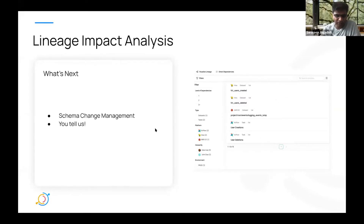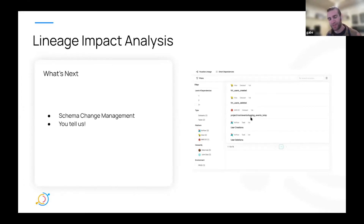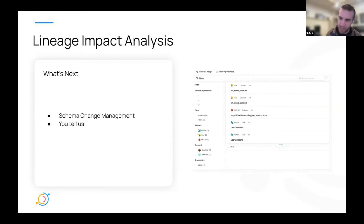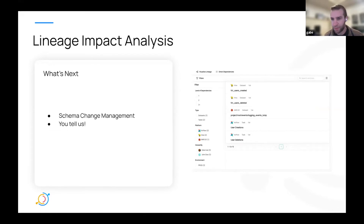In addition to being able to view this through the UI, we also have an API that you can query to get this information. In the API, it's not just those columns you see in the CSV — you can fetch any metadata about these entities. You can programmatically say: I want to get all the downstreams across all levels for this dataset. You can provide filters and search groups just like you can in the UI, so essentially everything you see in the UI you can express through our GraphQL API. We'll share documentation on that afterwards.